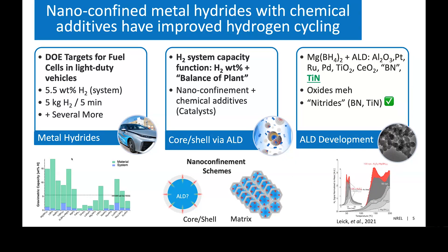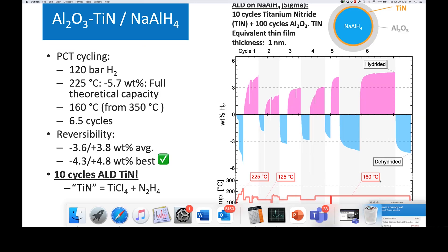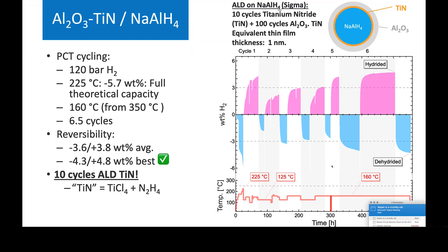One of the things that has been touted over the years is confining metal hydrides in nanostructured materials. We wanted to try the reverse of that, where we coat a metal hydride with ALD coatings and add in additives, and hopefully be able to pull off some of the same kind of results and actually do better than a nanoconfinement strategy. Initially, right off the bat, this material performed very well, and we were able to get the full capacity off at the first cycle.